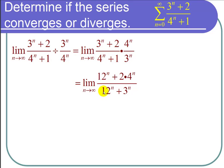Now to take this limit I'm going to apply a little algebra trick. I'm going to divide everything by 12 to the n. So 12 to the n over 12 to the n is just 1 and 4 to the n over 12 to the n is 1/3 to the n.